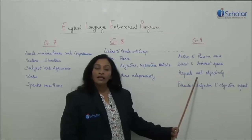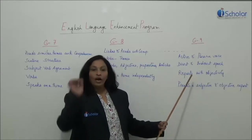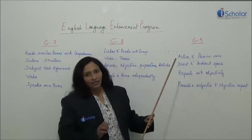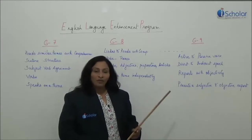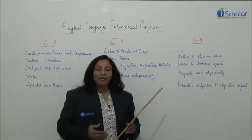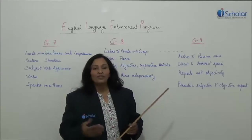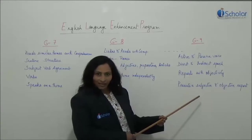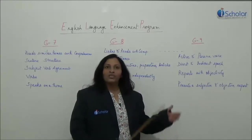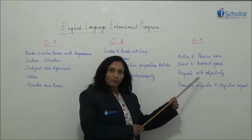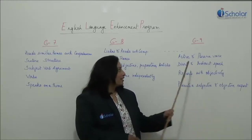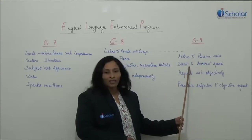They should be able to report something that has happened with objectivity. You have to teach students the difference between subjective and objective communication, and how important it is to be objective. Objective communication is completely free of emotion, while subjective communication is where you express your opinion. Both kinds of reporting have to be taught, because there are situations where they need to express their opinion. So here we look at reports with both objectivity and subjectivity, and the language structures involved — essentially passive, active and reported speech formats.